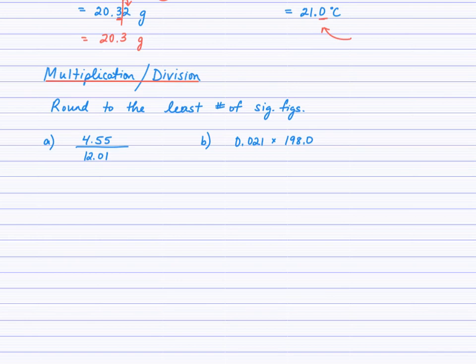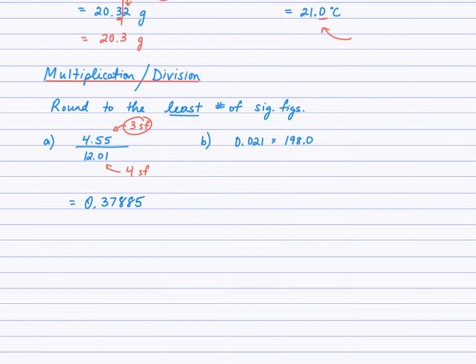For multiplication and division, now it's about counting sig figs. Look at the two measurements: three sig figs in the first, four sig figs in the second. Do the calculation and round your final answer to the least number of sig figs, which would be three. I copied out the digits from the calculator. Reading from left to right, start counting at the first non-zero digit: one, two, three — look at the neighbor, it's an 8, which is high. So I bump 0.378 to 0.379.